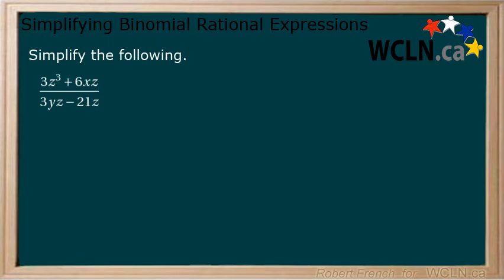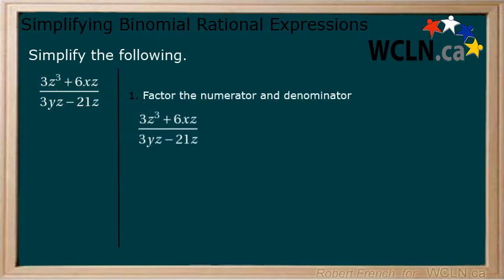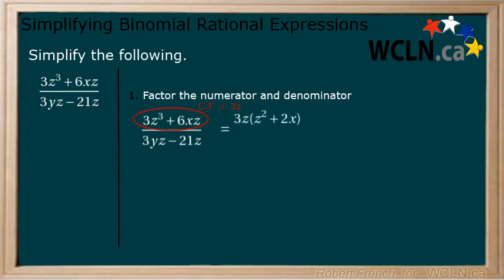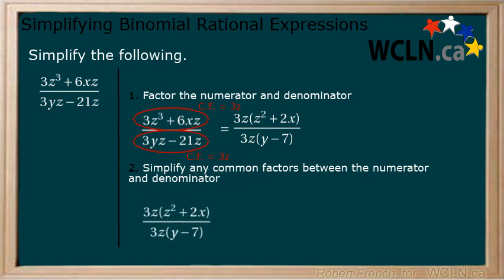Simplify the following rational expression. Step 1: factor both the numerator and denominator where possible. The numerator has a common factor of 3z. When we factor it out, we have 3z multiplying z squared plus 2x. The denominator has a common factor of 3z. When we factor it out, we have 3z multiplying y minus 7. Step 2: simplify any common factors between the numerator and the denominator. We have 3z as a common factor. When we cancel it, we are left with a final answer of z squared plus 2x all over y minus 7.